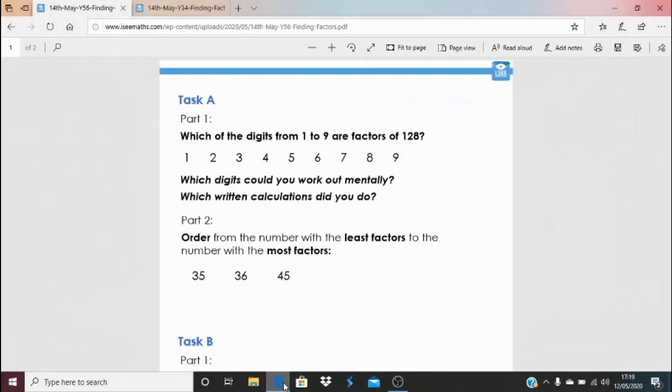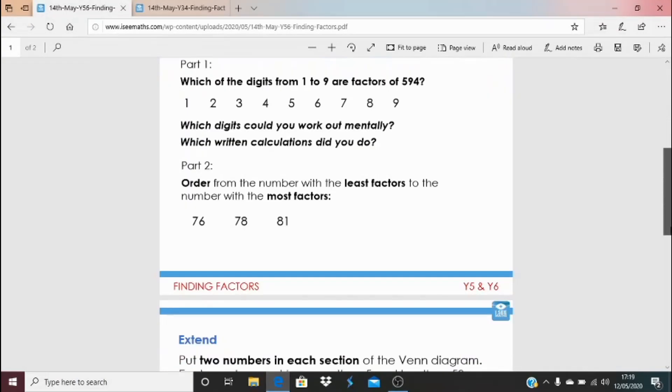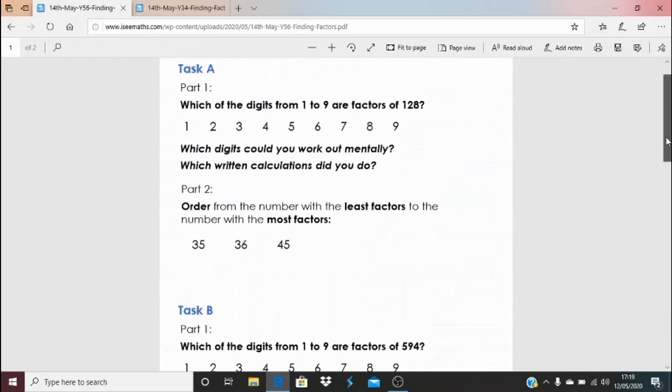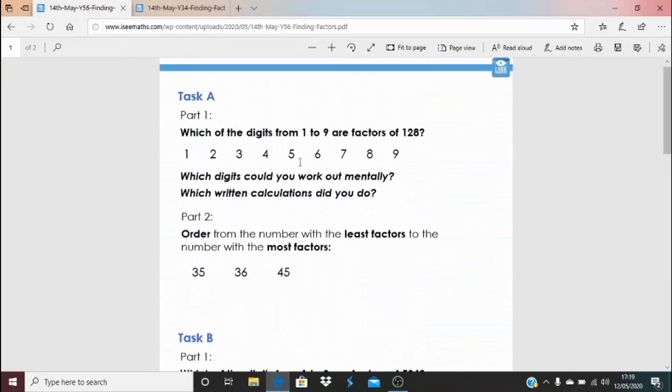And so to today's tasks, which you can find by clicking on the blue link underneath this video. We've got task A and we've got task B and we've got an extend task there. So for task A and task B, you've got to have a look at the number that's given and which of the digits from 1 to 9 are factors of, for example, 128. Have a look and think, well, which can I work out immediately? I don't need to do any calculation for. There might be other numbers where to work out if it's a factor of 128, you need to do a few mental calculations, some you think a written calculation.